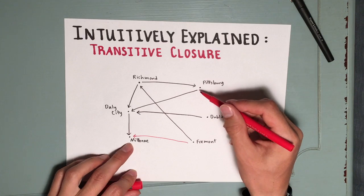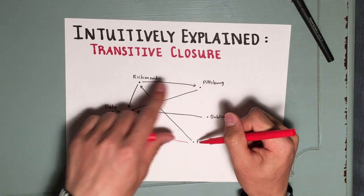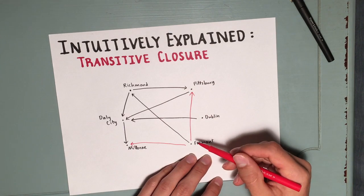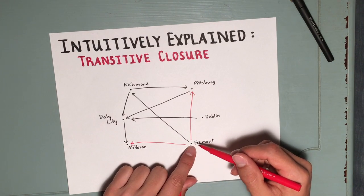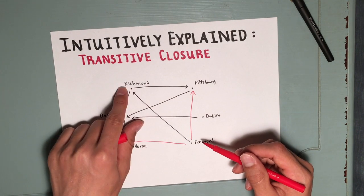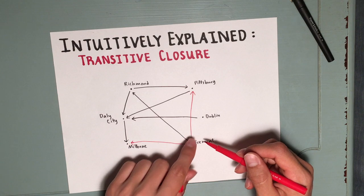We can also go from Fremont to Pittsburgh if we go Fremont to Richmond, Richmond to Pittsburgh. Now, those are the only three places we can go from Fremont. We can go to Millbrae through the path that I explained, to Richmond directly, or to Pittsburgh, but we can never get to Dublin.